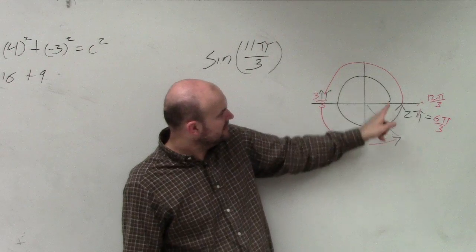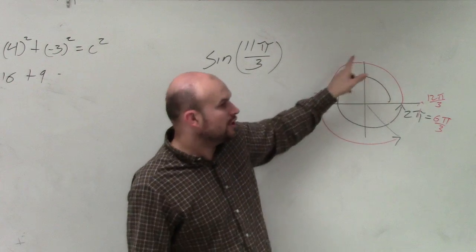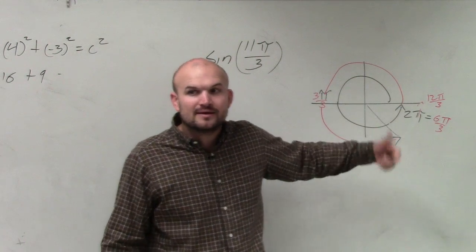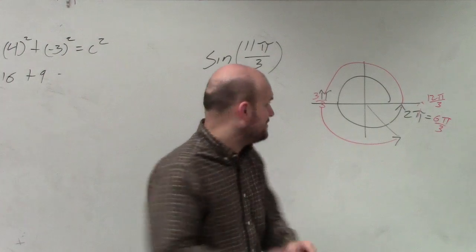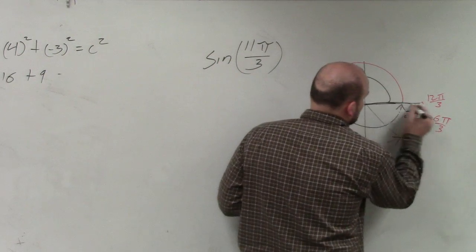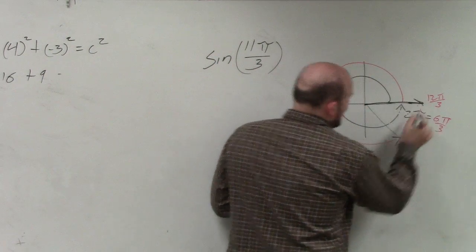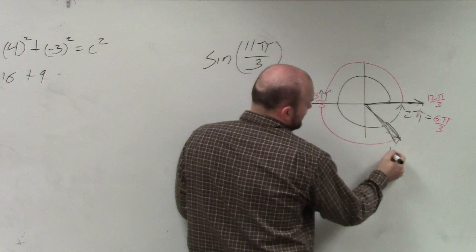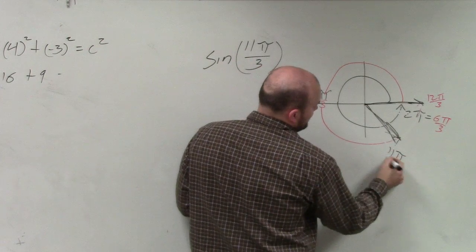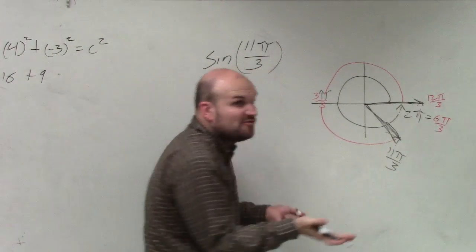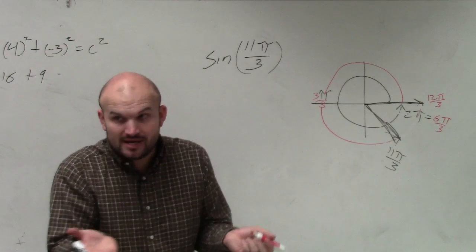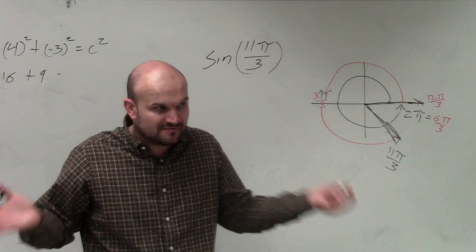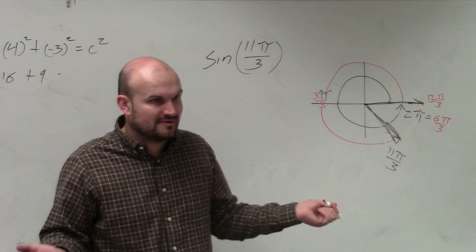What I want you guys to understand is: we know the angle is greater than all the way around once. So here's my initial side, and this angle — 11 pi over 3 — is right here, because all the way around would be 12 pi over 3. Everybody agree with that? It's very important that you understand this.